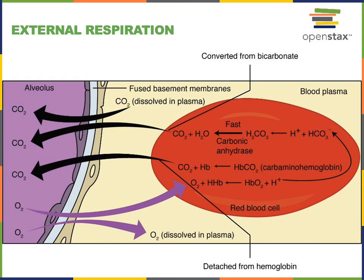In contrast, carbon dioxide is moving out of the blood in the pulmonary capillaries where there's a relatively high partial pressure of CO2 — around 46 mmHg — into the alveoli where the partial pressure of carbon dioxide is around 40 mmHg. So after external respiration, the partial pressure of oxygen in the blood flowing back in the pulmonary veins is up around 100 mmHg.